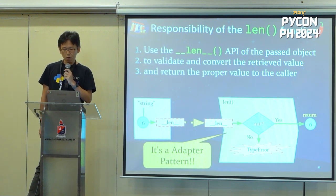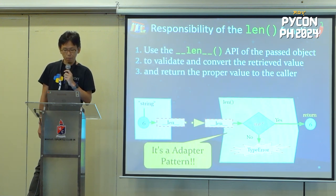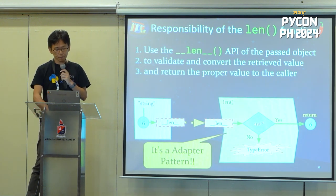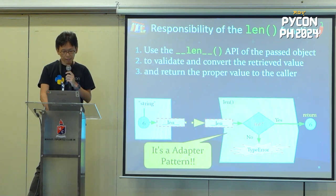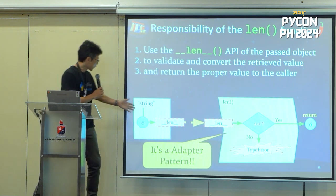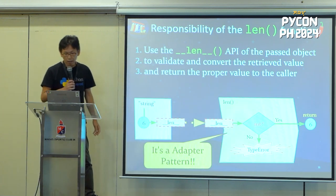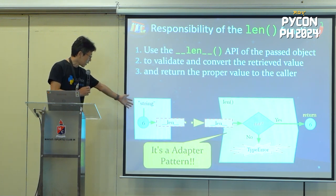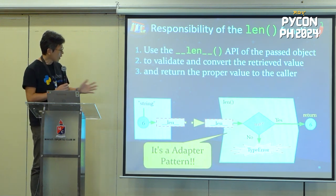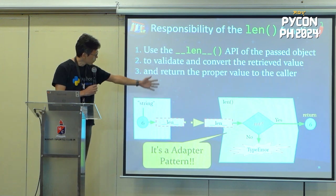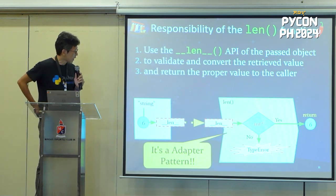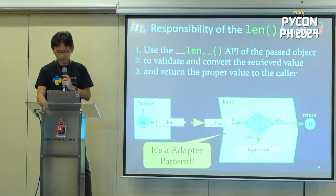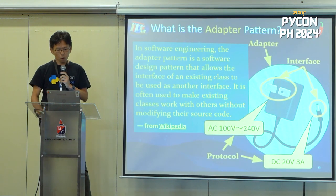The len function adapts the object, extracts the value, processes it, and returns the result. Visually, `__len__` is split into two — left side and right side. The left side is a string object that provides the `__len__` method, and the right side means the len function requires the `__len__` method to adapt the object.